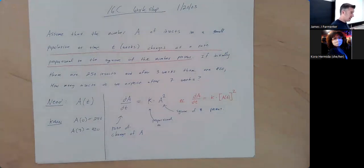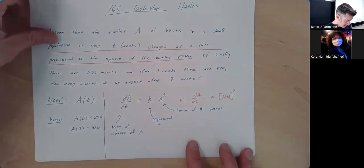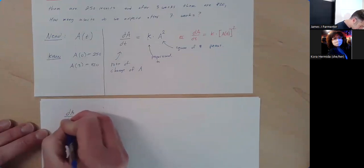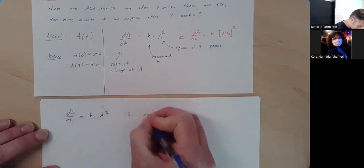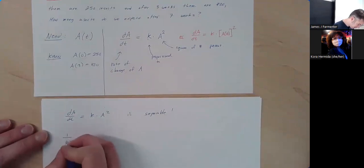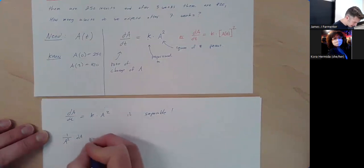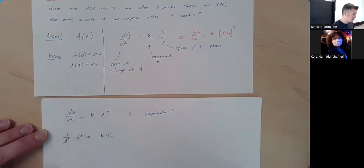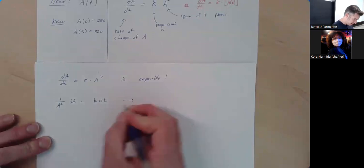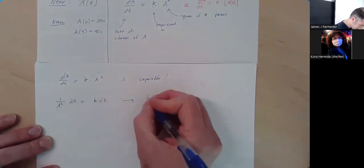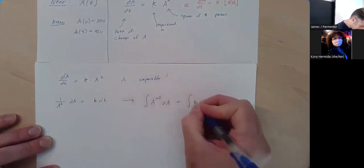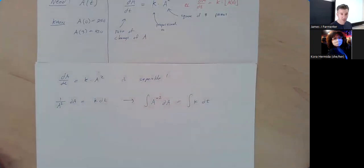I can pretty easily bring the A's over to the left and the t's over to the right. dA/dt = kA² looks separable. I'm going to divide both sides by A squared: (1/A²)dA = k dt. I'll rewrite the left-hand side as A to the negative second, so the integral of A^(−2) dA equals the integral of k dt. Not terrible — fairly straightforward anti-differentiation.